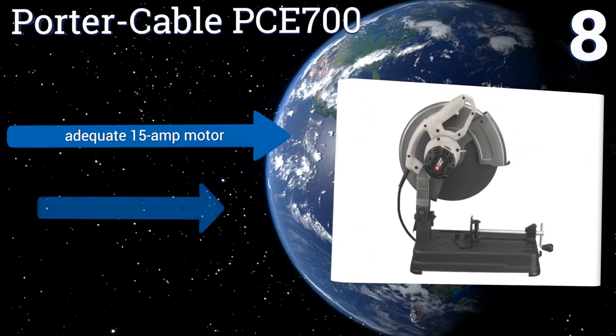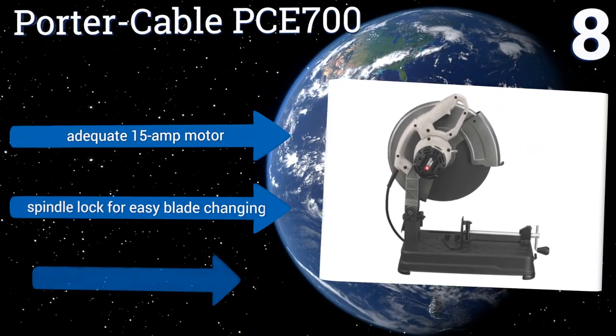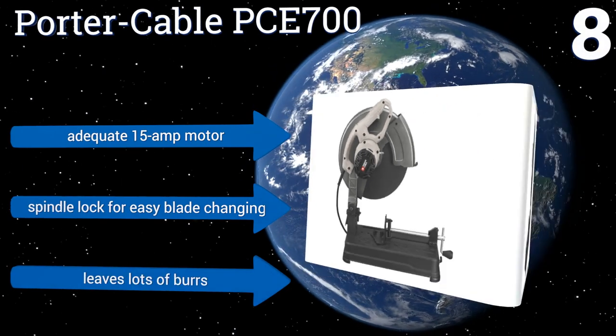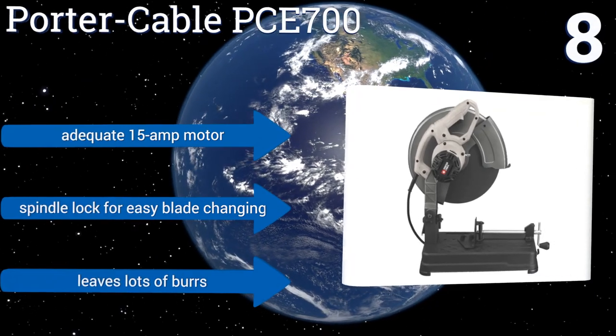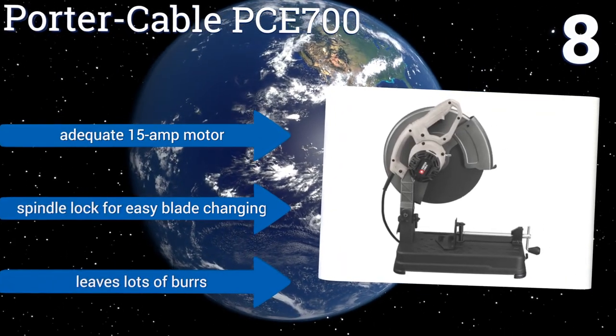It works on all woods as well and includes a 45-degree left angle. It takes some time to get through thicker metals, however. It comes with an adequate 15-amp motor and a spindle lock for easy blade changing, but it leaves a lot of burrs.